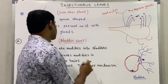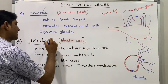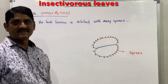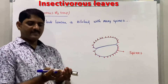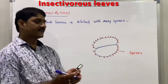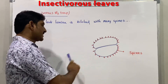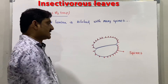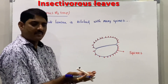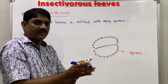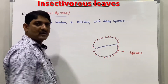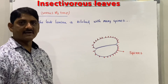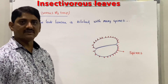Dionaea, commonly known as Venus fly trap, has a bilobed leaf lamina with many spines. The petiole is wing-like. When an insect contacts the bilobed structure, it closes like a book. On the following day, proteolytic enzymes digest the insect, and the nitrogen from the digested protein is absorbed by the plant.